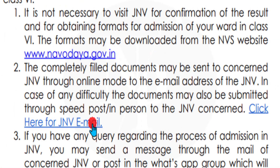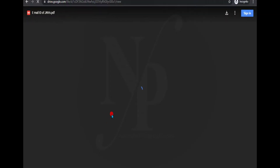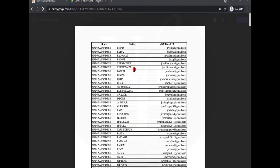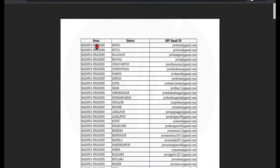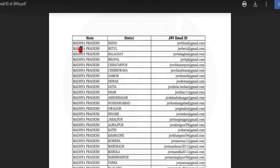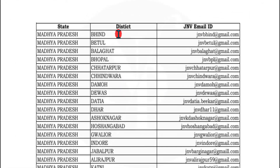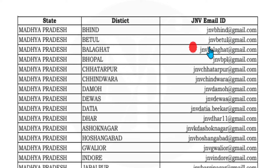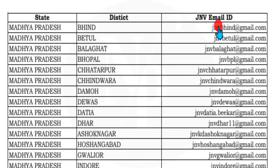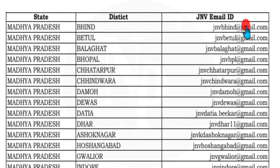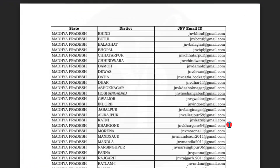In this link, the email address of each JNV is given. Now let us click on this link. This is the list of email IDs. In the first column we have state name, in the second column district name, and in the third column we have the JNV email ID.